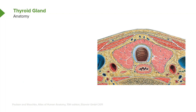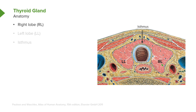Here we begin with the thyroid, and what I want you to understand are some basic anatomy fundamentals. First, the thyroid is made up of lobes. Here we see the right lobe and the left lobe. Lastly, both lobes are connected by an isthmus.